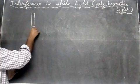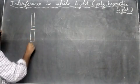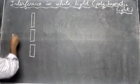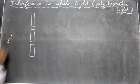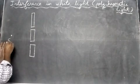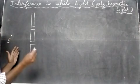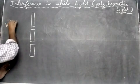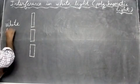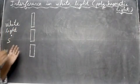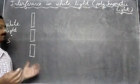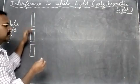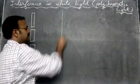In Young's double slit experiment, we have slit S1 and slit S2. Instead of a monochromatic source, we have a white light source sending white light through both slits. White light contains many colors — a group of seven colors. Then we have a screen where the interference pattern forms.